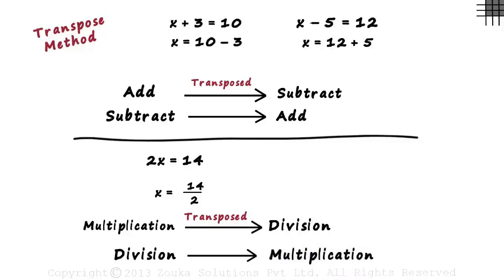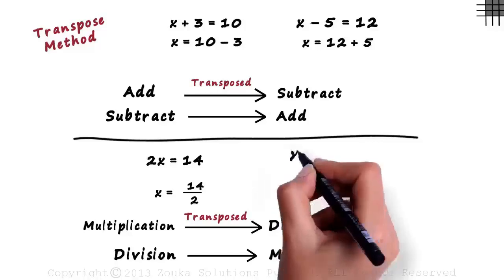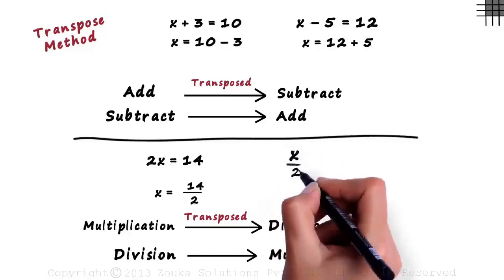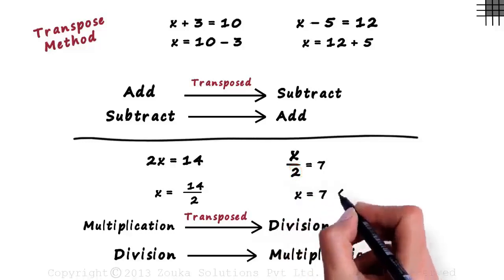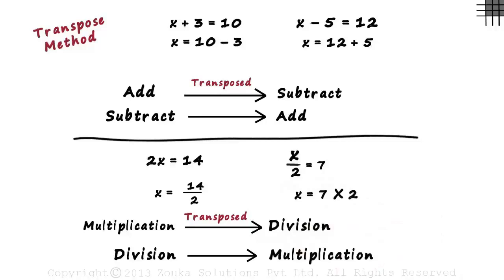Consider this equation: x divided by 2 equals 7. We can see 2 is dividing the left hand side, so we can transpose it to the other side by multiplying the right hand side by 2. We get x equal to 7 multiplied by 2.